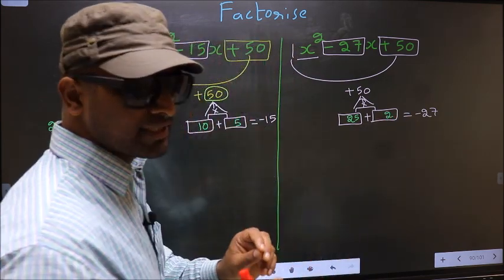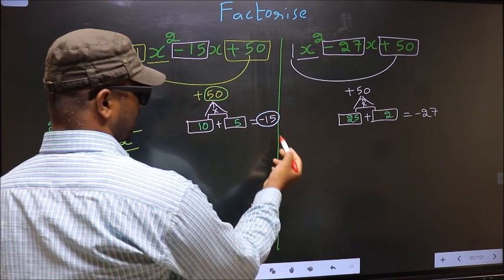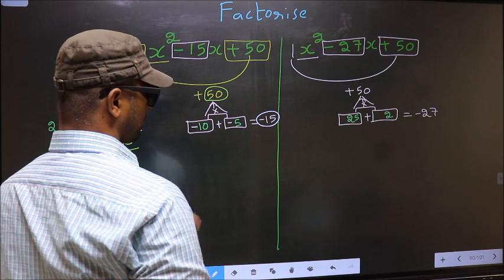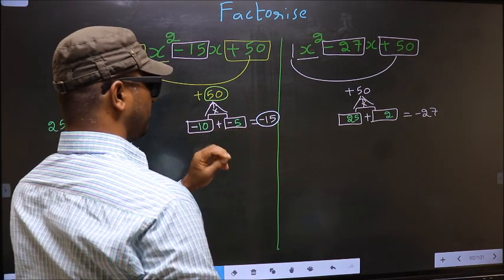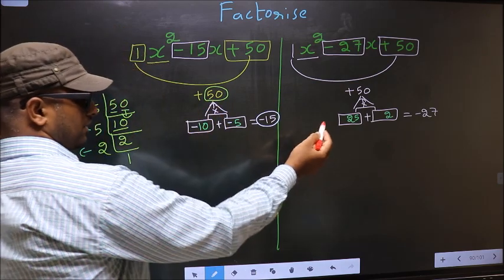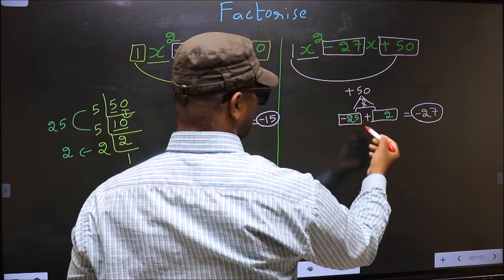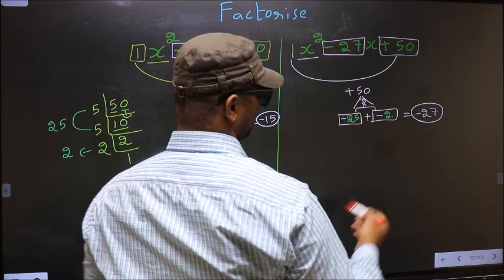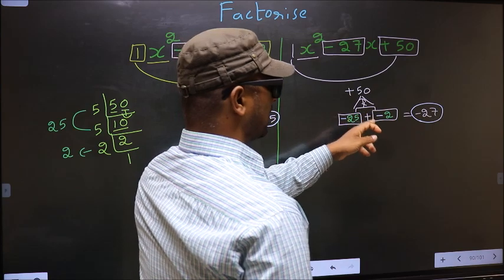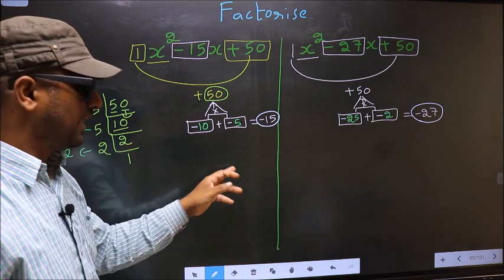Now we should adjust the signs. Over here we have minus 15, so to get minus 15 we place a negative on both numbers. Minus 10 minus 5 is minus 15. For the second: minus 25 minus 2 is minus 27, and minus 25 into minus 2 is plus 50. So we have adjusted the signs in both.